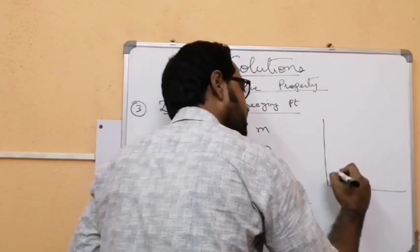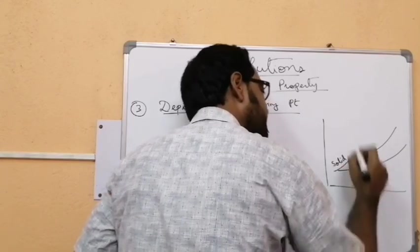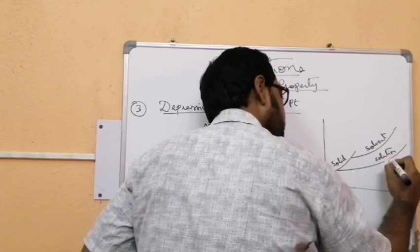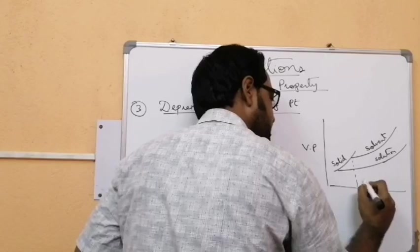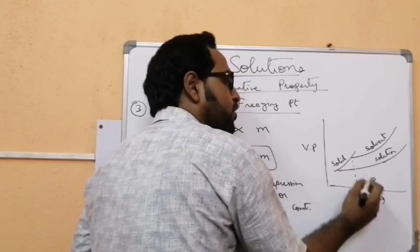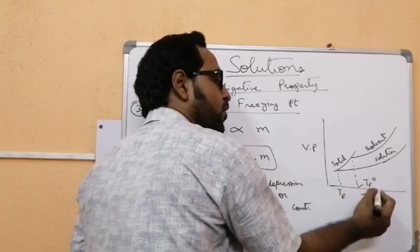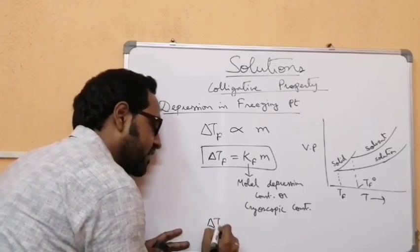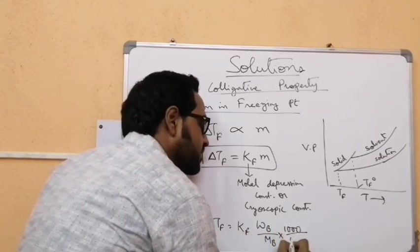For the graphical presentation: the vapor pressure of solid, the vapor pressure of solvent, and the vapor pressure of solution are plotted against temperature. The temperature at which the solvent and solid curves meet is Tf°, the freezing point of the solvent. The temperature at which the solution and solid curves meet is Tf, the freezing point of the solution. So the depression in freezing point is ΔTF = Tf° − Tf.